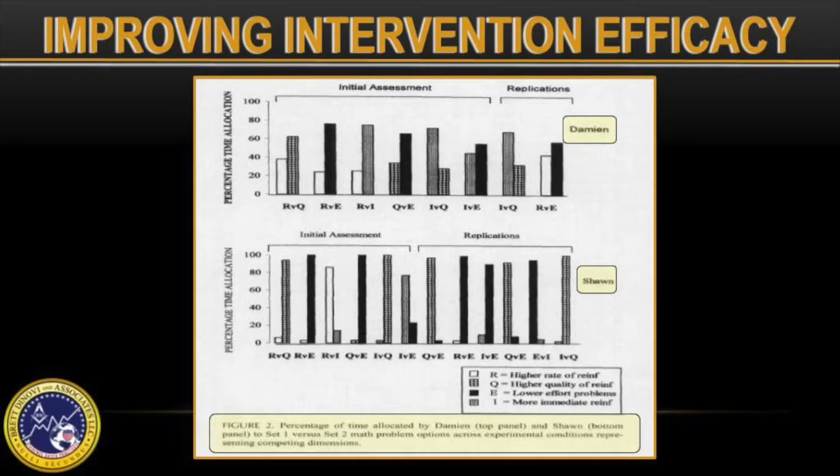In the second phase of this study, the authors used the results of the brief assessment to design a DRL for disruptive behavior during quiet time. A reversal design was used to assess the effects of a DRL that incorporated the most preferred dimensions of reinforcement compared with a DRL that did not incorporate that reinforcer dimension manipulation. For both participants, the intervention based on the brief assessment results in lower levels of disruptive behavior than the comparison intervention.